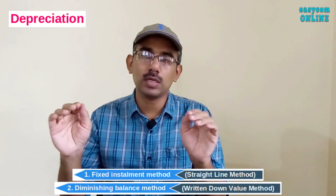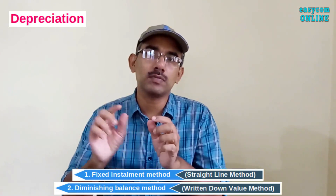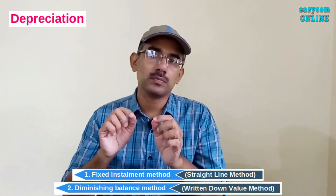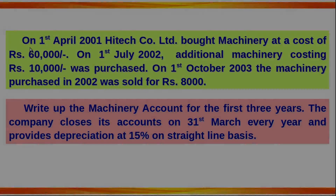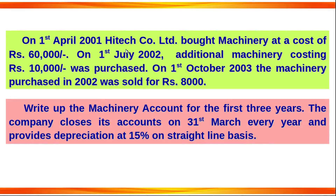On 1st April 2001, Hitec Company Limited bought machinery at a cost of Rs. 60,000. On 1st July 2002, additional machinery costing Rs. 10,000 was purchased. On 1st October 2003, the machinery purchased in 2002 was sold for Rs. 8,000.